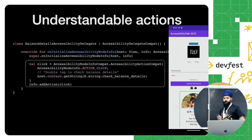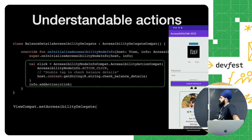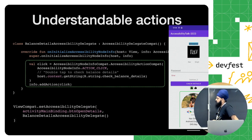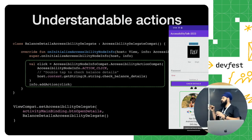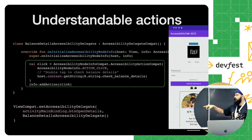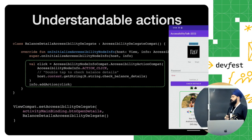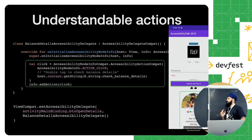You can add multiple actions in the delegate — this one is for action click, and in the previous slide I added long click, but with a single delegate we can add multiple actions. Once we define the delegate, we set the accessibility delegate on a particular view — in this case on the check details button — and provide the delegate we just created.